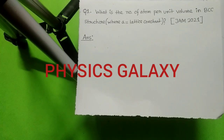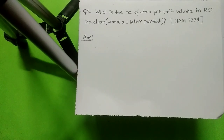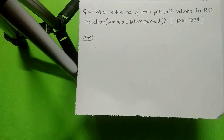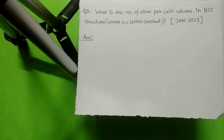Hello everyone, welcome to the channel Physics Galaxy. Today we will discuss solutions of some questions from JAM 2021 Physics paper. The first question: what is the number of atoms per unit volume in a BCC structure, where 'a' is the lattice constant?